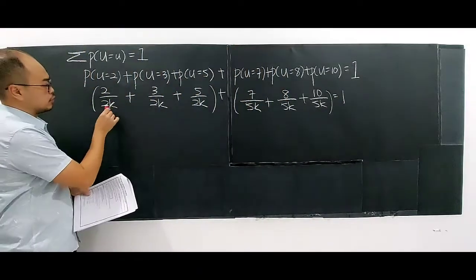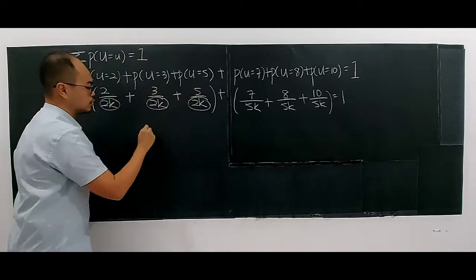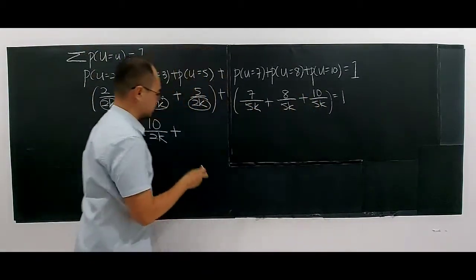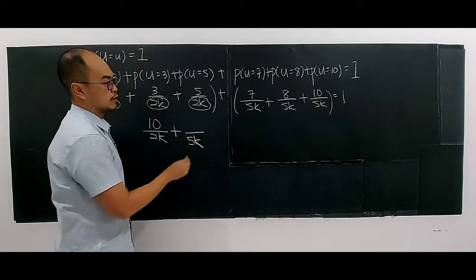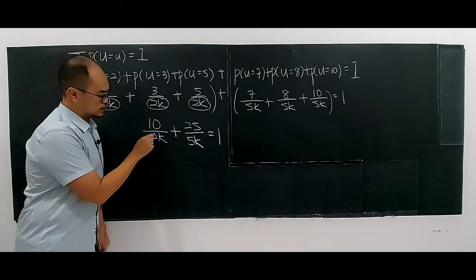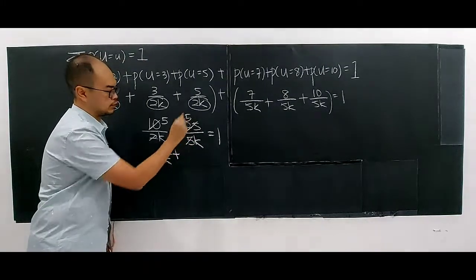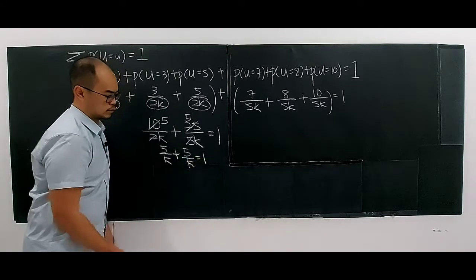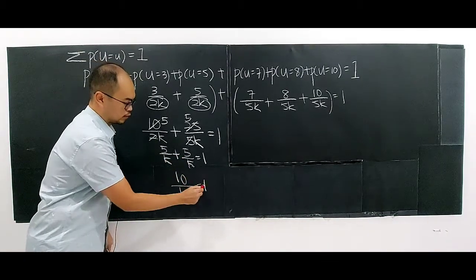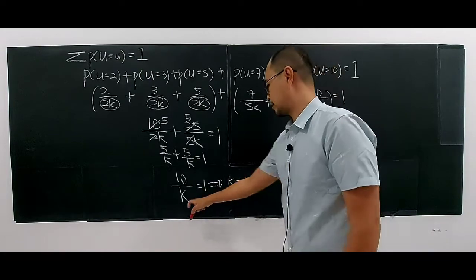Let's simplify. The denominators within each group are the same. Add up the numerators: 2+3+5 = 10, so you get 10 over 2k. Then 7+8+10 = 25, giving 25 over 5k. This simplifies: 10 over 2k becomes 5 over k, and 25 over 5k also becomes 5 over k. So 5/k + 5/k = 10/k = 1, giving k = 10.